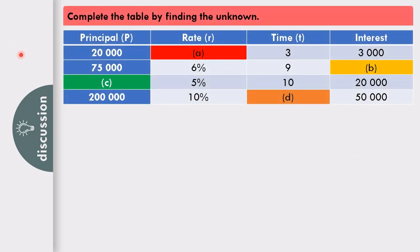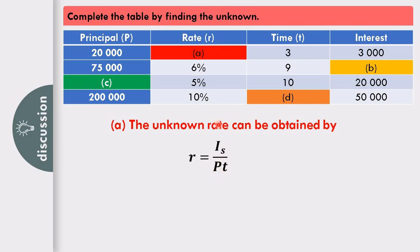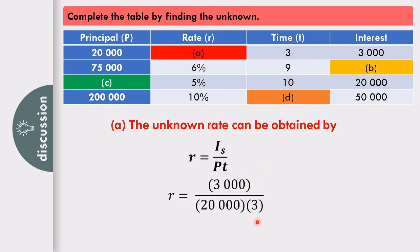Next, we complete a table where the unknowns include not just interest but also principal, rate, and time. To find different unknowns, we derive them from the main formula I sub S equals PRT. In the first row, the unknown is rate, with principal 20,000, time 3, and interest 3,000. The formula becomes R equals I sub S over PT, giving R equals 3,000 over 20,000 times 3, so the rate is 0.05 or 5%.